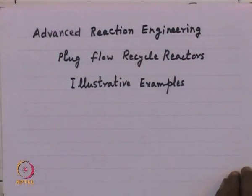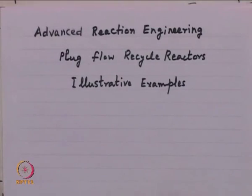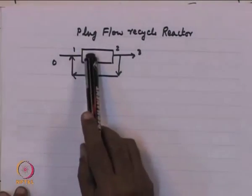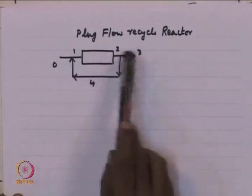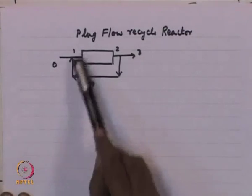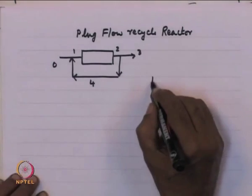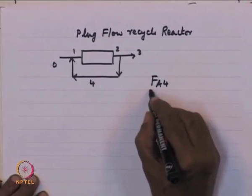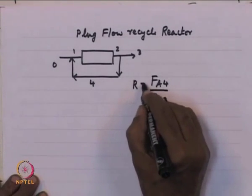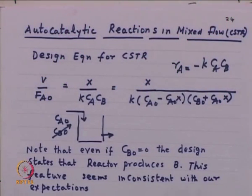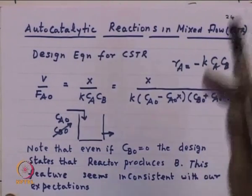We get started with plug flow recycle reactors. Today I will look at some illustrative examples to show how these systems behave. Our system looks like this: you have a plug flow vessel which may contain a catalyst or an inert through which reactants are flowing, and there is a recycle. The recycle ratio is defined as F_A4 divided by F_A3. An example of importance is the use of autocatalytic reactions in mixed flow, because mixed flow is a form in which this context becomes relevant.